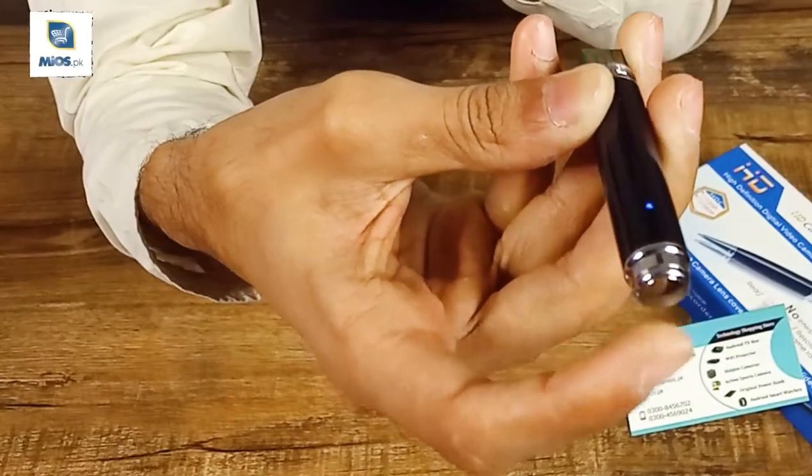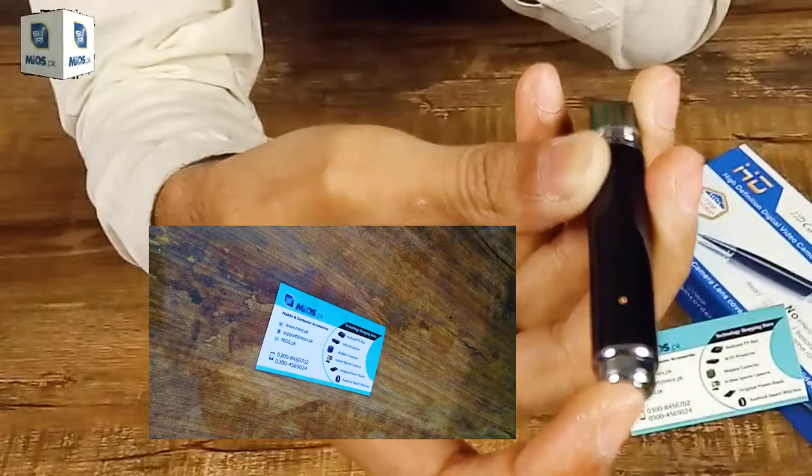If you click on it, the blue light will turn on and then turn off. This means a picture will be taken.